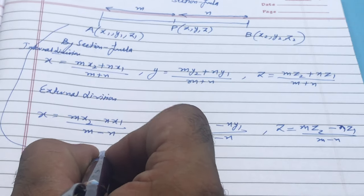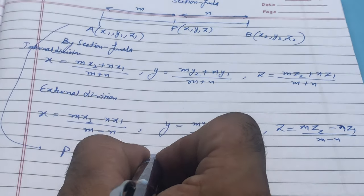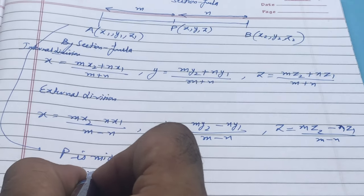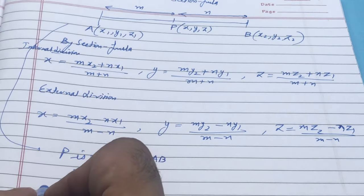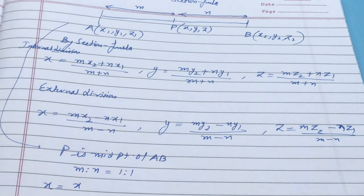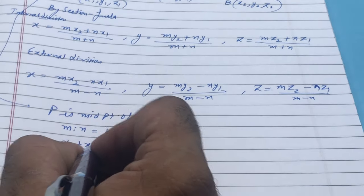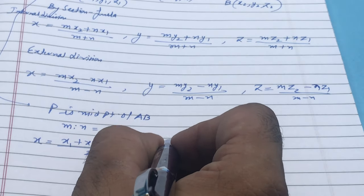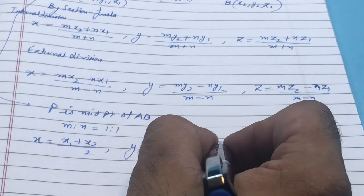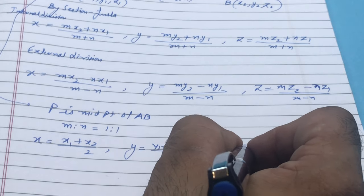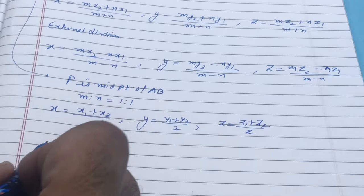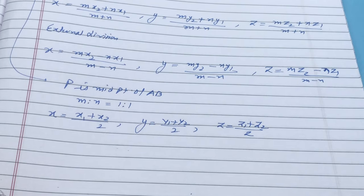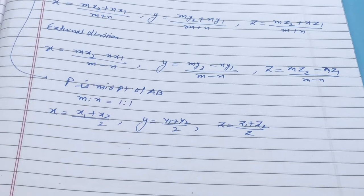A special case: if P is the midpoint of AB (given in internal division), then m:n = 1:1, so m=1 and n=1. The coordinates become: x = (x1+x2)/2, y = (y1+y2)/2, and z = (z1+z2)/2. These are the midpoint formulas. Now let's move to the questions.